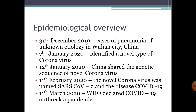On the epidemiological overview: on 31st December 2019, in Wuhan City of China, some cases of pneumonia of unknown etiology were reported. On 7th January 2020, they identified a novel type of coronavirus. On 12th January 2020, China shared the genetic sequence of the novel coronavirus.